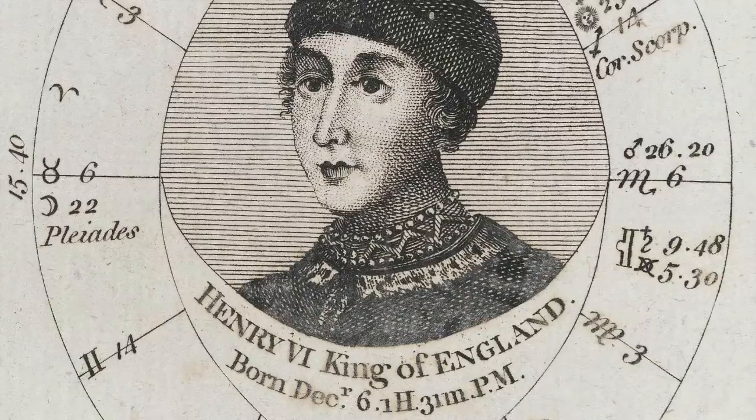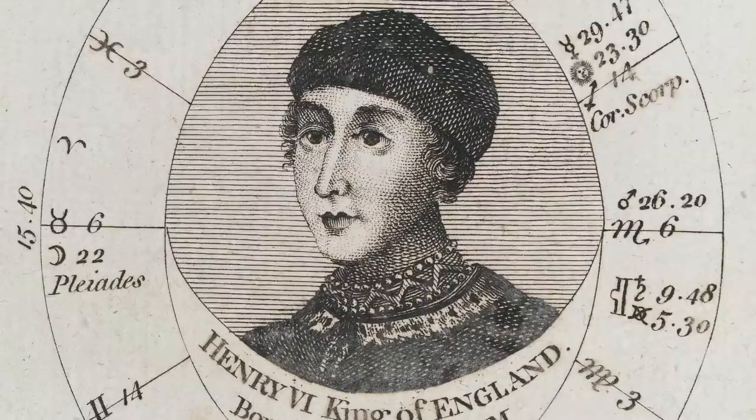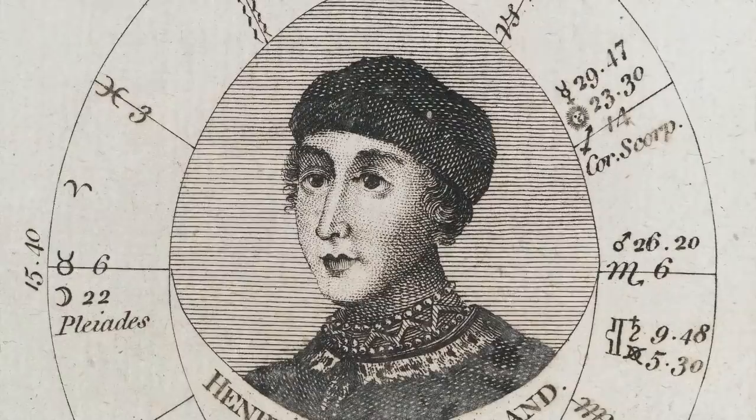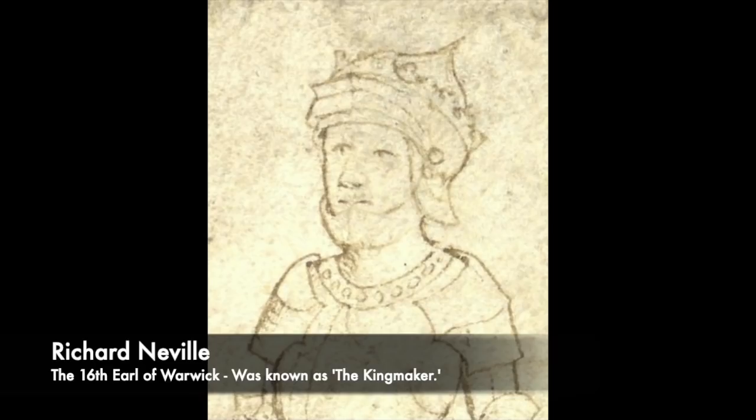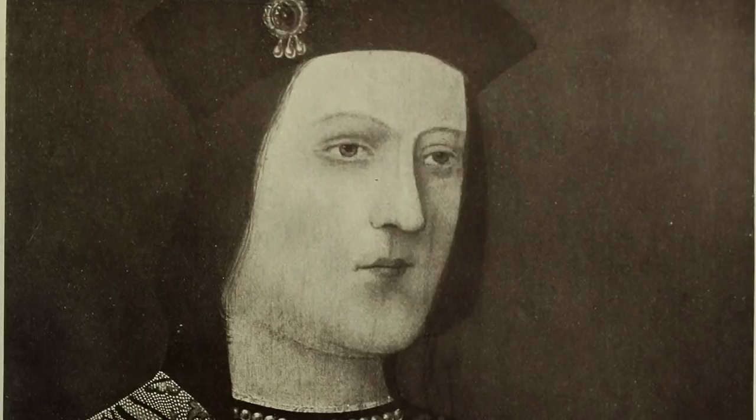But Henry would be returned to the throne, as at the turn of the 1470s an incredibly powerful medieval noble would switch his alliance from York to Lancaster. The Earl of Warwick, known as the Kingmaker, switched, turning on the new King Edward IV. He was seen as the most powerful man in England and the true power behind the Wars of the Roses. He then managed to restore Henry VI onto the throne in 1470, and Edward himself was forced into exile.